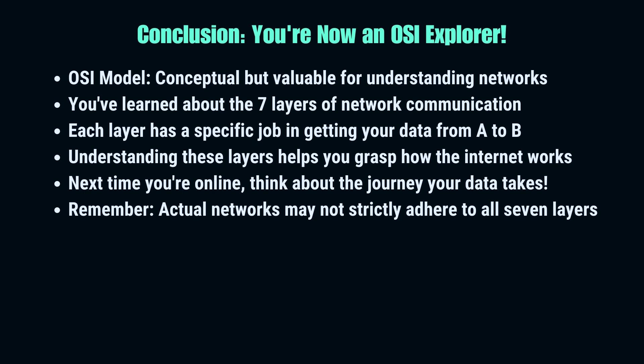The OSI model's seven layers — physical, data link, network, transport, session, presentation, and application — form the backbone of network communication. This framework helps us understand how data travels across networks, from physical signals to the apps we use daily. While modern networks don't strictly adhere to the OSI model, it remains an essential tool for network professionals and enthusiasts alike, offering valuable insights into the complexities of digital communication. Remember that every online interaction involves these layers working seamlessly together. Subscribe to stay updated on more tech breakdowns. Thank you for joining us on this journey through the OSI model. Keep learning and keep connecting.